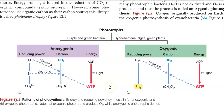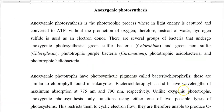The other two aspects are the same for anoxygenic photosynthetic bacteria as for oxygenic ones. That is, they are able to convert atmospheric carbon dioxide into cell carbon, and they can obtain energy in the form of ATP. This ATP is generated by the flow of electrons in the electron transport chain, which results in an electrochemical gradient that fuels ATP formation.